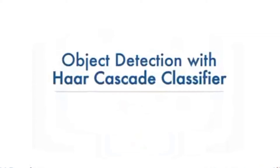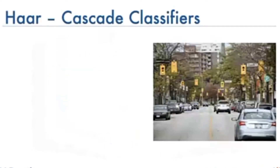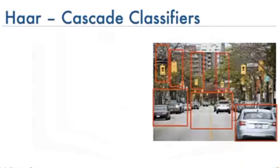In this video, we will provide an overview of object detection using the HAR feature-based cascade classifiers. We are going to use HAR feature-based cascade classifiers to detect cars, traffic lights, pedestrian stop signs, etc. in this image.